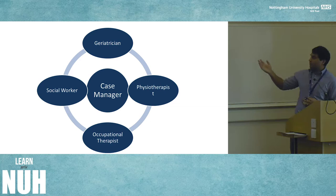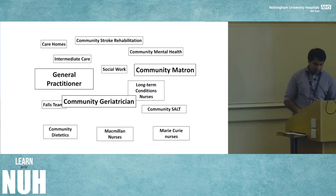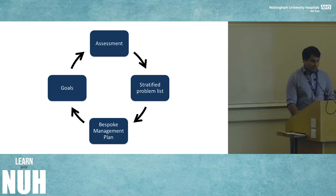You have to work in a team — not just a geriatrician. My ward team includes a nurse in charge, physiotherapists, occupational therapists, social workers, and ward staff. In the community the team is slightly different: community matrons, GPs, and other professionals. But you need a team, and I'll talk more towards the end about what the perioperative frailty team might look like.